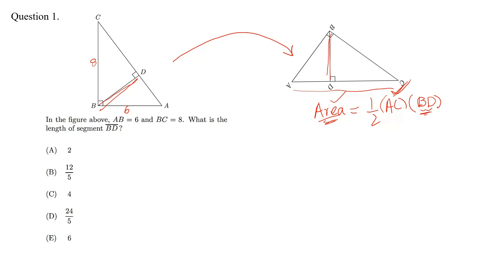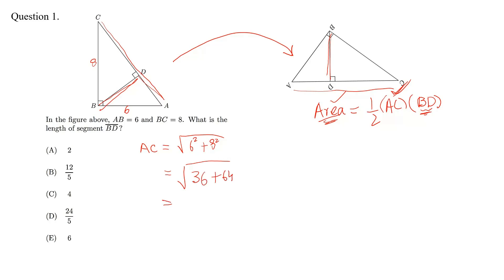Look at the figure. AC is this one. This is a right angle triangle and we can calculate AC by Pythagoras theorem. AC is equal to 6 squared plus 8 squared, which is 36 plus 64. This is 100 and AC is equal to 10.